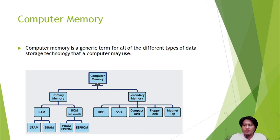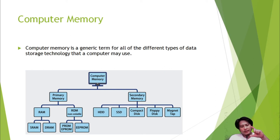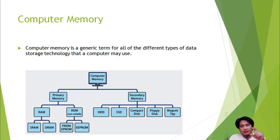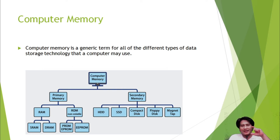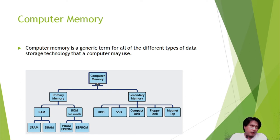RAM is the commonly known computer memory — it is a physical card roughly four inches by one inch, attached to the motherboard. That is your random access memory. ROM, or read-only memory, is a type of memory from which you can only read information.